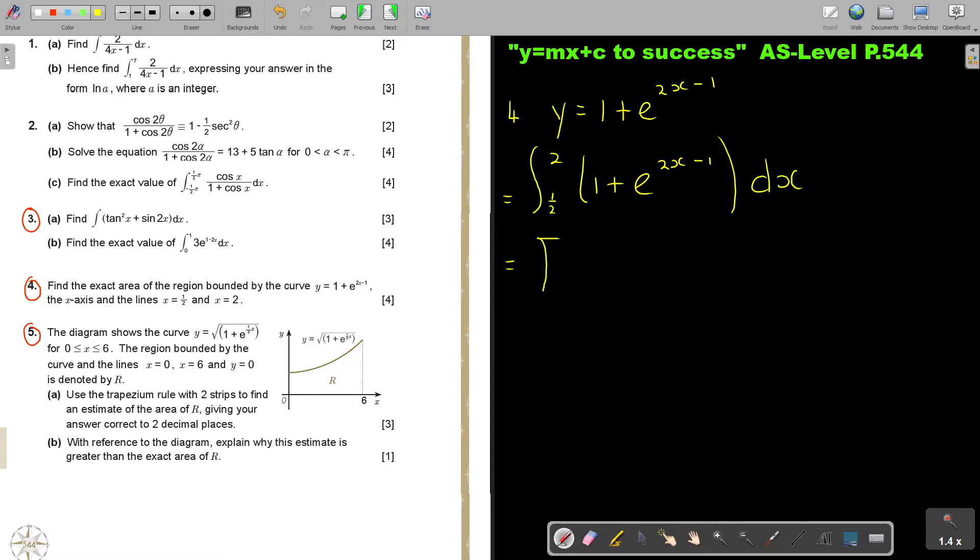And that is going to be X plus, and now don't forget, it's a half, E, 2X minus 1. And then it's 2 and a half. And now I substitute. So I substitute 2 plus a half, E, 2 times 2 minus 1, minus a half plus a half, E, 2 times 1 minus 1.